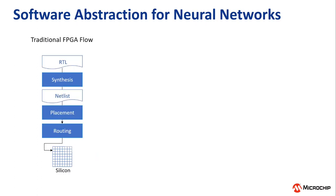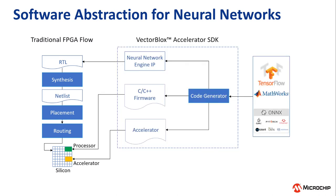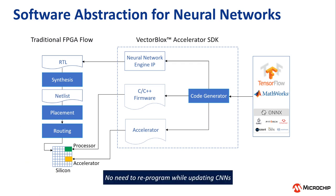Traditional FPGA flow consists of writing code in RTL, synthesizing it, placing and routing resources, followed by programming the .hex file on the chip. Every time the code is changed, the steps have to be repeated again. Using VectorBlocks, neural networks can load and update without changing the FPGA hardware design, and the network behavior is controlled with C or C++ code.